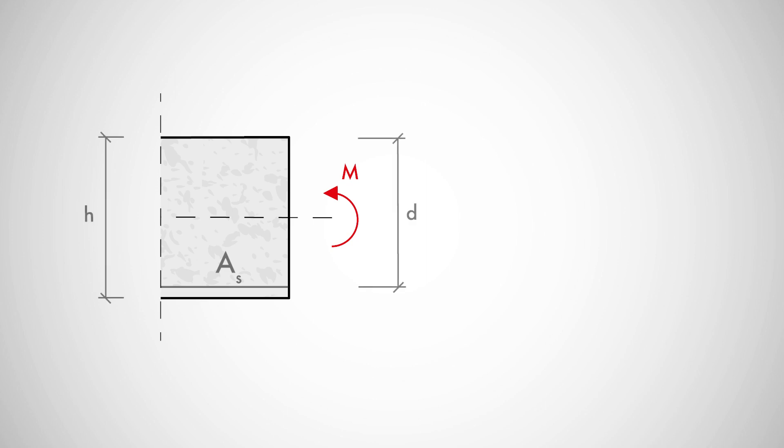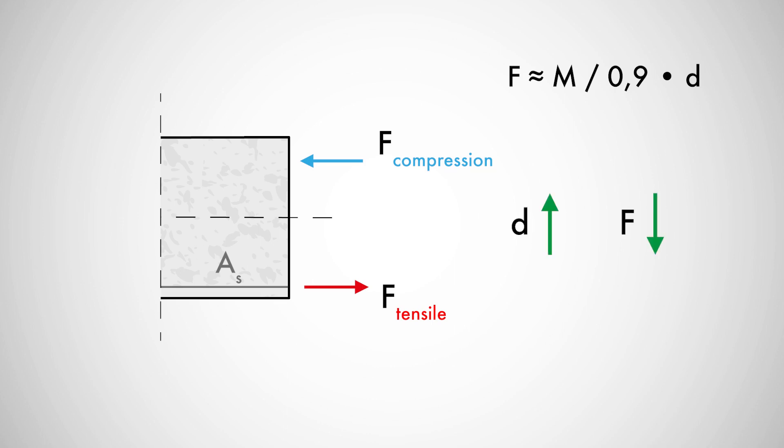The effective depth is directly related to the bending design of a component because it defines the internal lever arm and therefore also the acting tensile and compressive forces. Thus, the larger the internal lever arm, the smaller the values of the force couple.